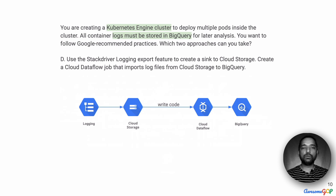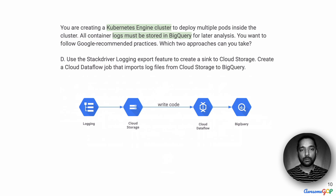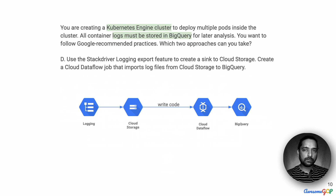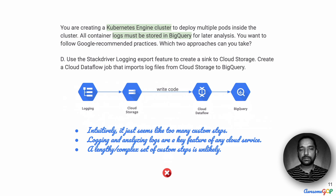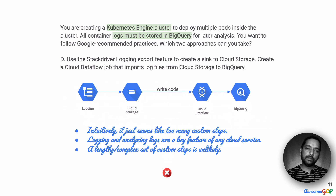Option D suggests that we use the Stackdriver Logging Export feature to create a sink to Cloud Storage, then from Cloud Storage pick that data, run a Cloud Dataflow job on it to import the log files and move that into BigQuery. We're using quite a few Google Cloud solutions and the first question that should come to mind is that it just seems like too many steps. Logging and analyzing logs today are a fundamental feature of any cloud service, so a complex, lengthy set of steps for a basic requirement like logging seems unlikely. Given the excessive steps and complexity, I'm going to eliminate option D.